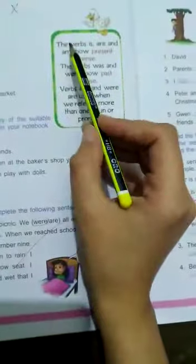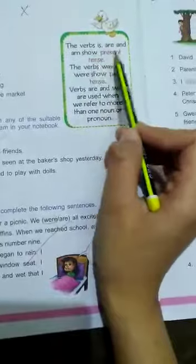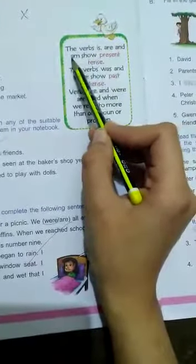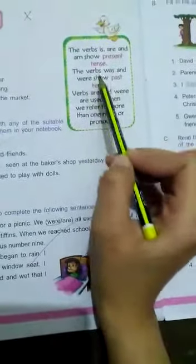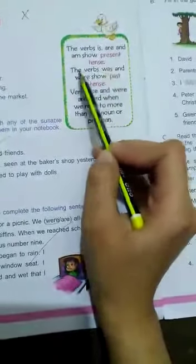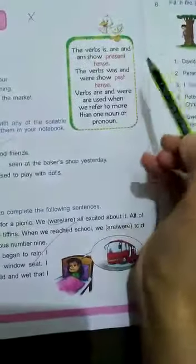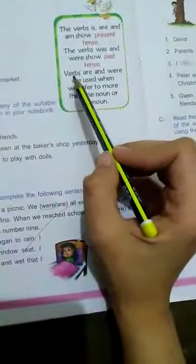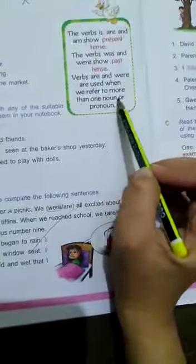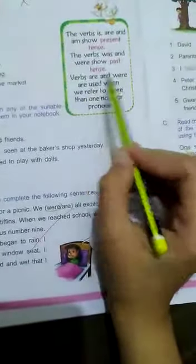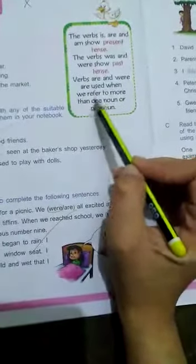So let's begin with the reading. The verbs is, are and am show present tense. The verbs was and were show past tense. Words was and were are used when we refer to more than one noun or pronoun.